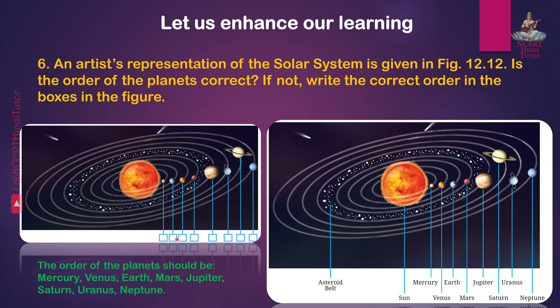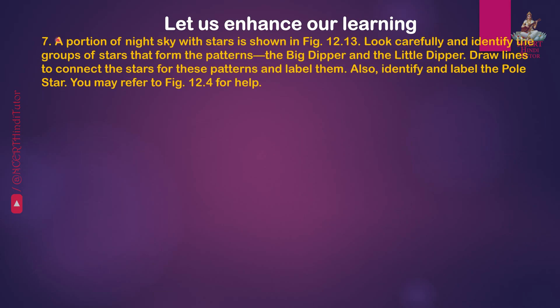So the correct numbered order is: 1, then 2, then 3, then 4, then 5, then 6, then 7, and 8. Question 7: